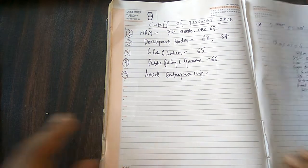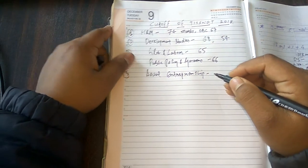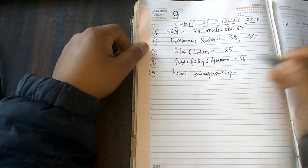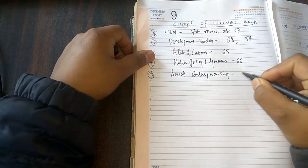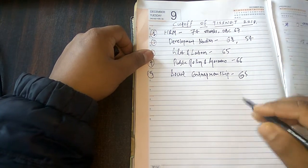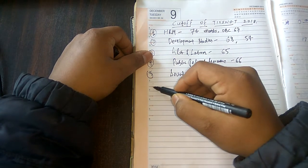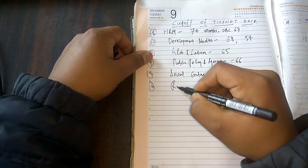Social entrepreneurship, the cutoff, one of the best courses from TISS. It's 65 marks this year for the general category. The sixth one is rural development, also one of the good courses.